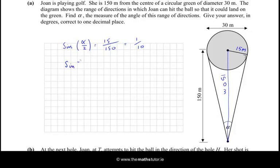So, all we need to do is get sine inverse of 1 over 10 and we will have α, well, α over 2. Sine inverse of 1 over 10 is 5.74 degrees, so that's α over 2. So, we just need to multiply that by 2 to get α. And that means that α is 11.5 degrees to 1 decimal place.